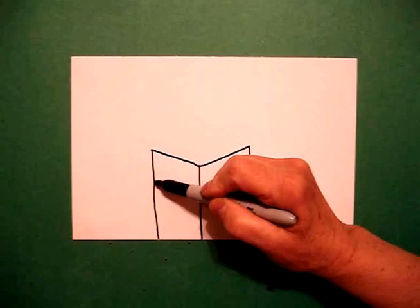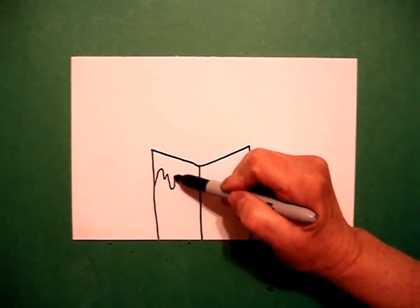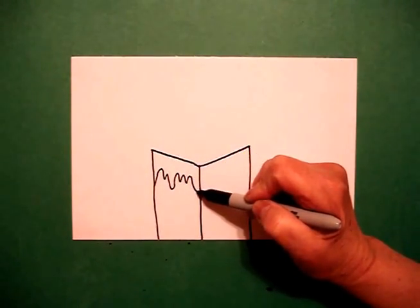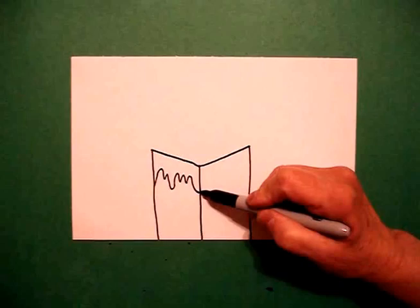Starting back on the left, I draw a wavy line to the center. And then I pick that point up, draw a wavy line up to the right.